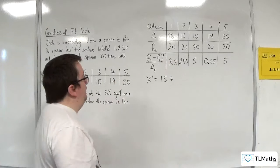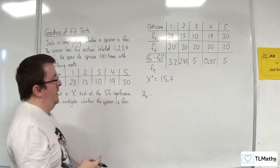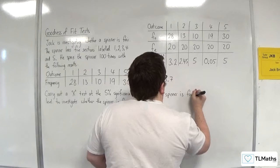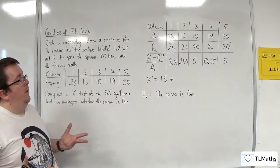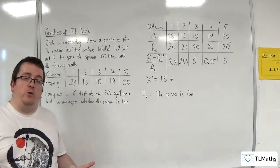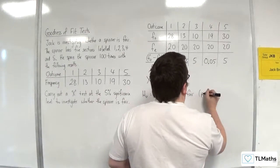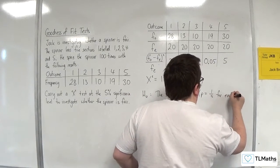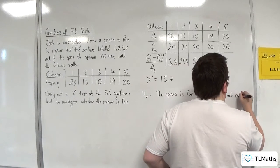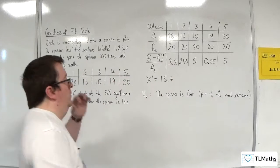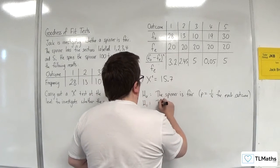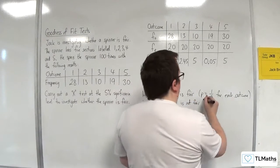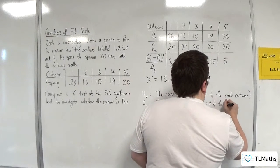Now the test. The null hypothesis H0 would be that the spinner is fair. You could write that as probability equals one-fifth for each outcome. The alternative hypothesis H1: the spinner is not fair, so probability is not equal to one-fifth for each outcome.